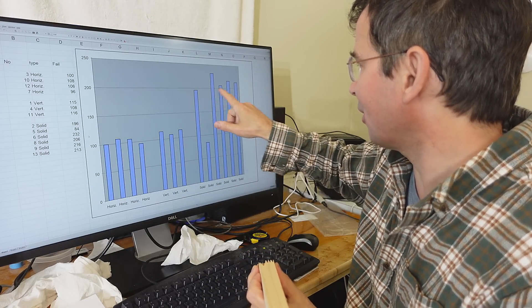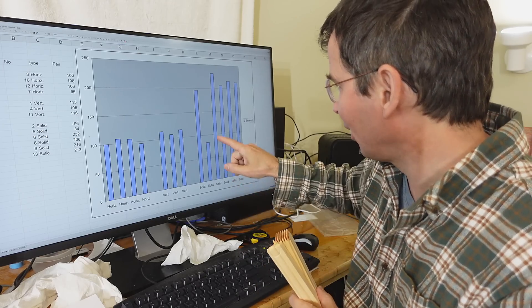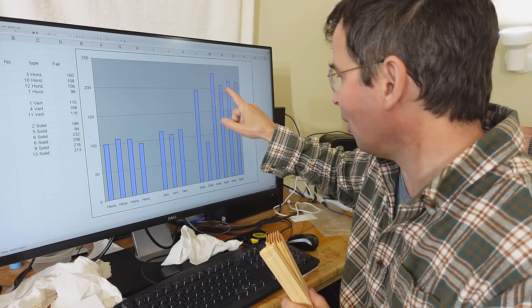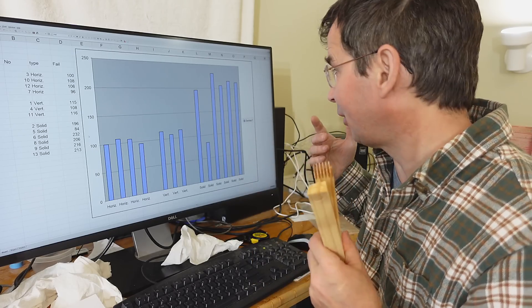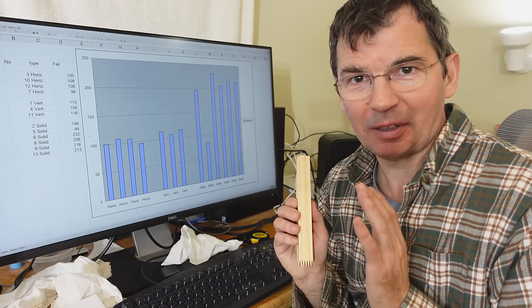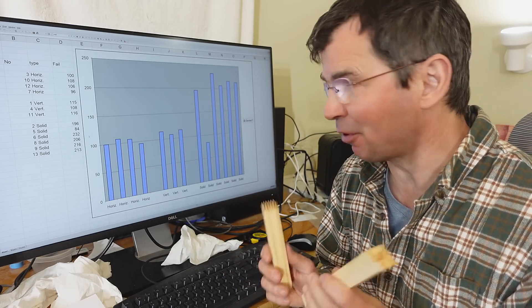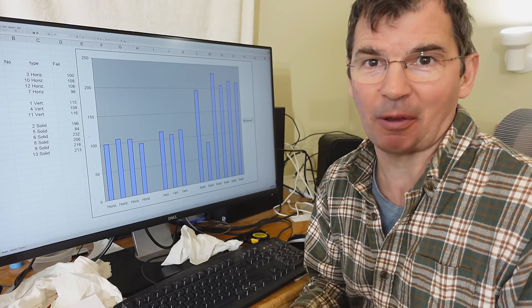And then these ones are solid breaks, that is no joint, and these all were around 200 kilograms except for this one which for some reason failed early. But excluding those ones, I would say the finger joint is only about half as strong as solid wood, which I find rather disappointing.